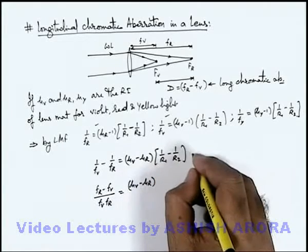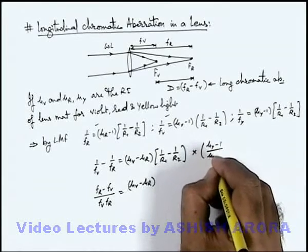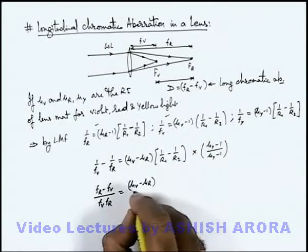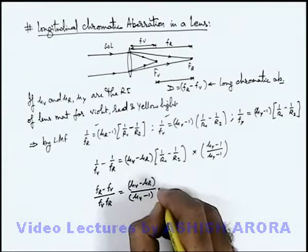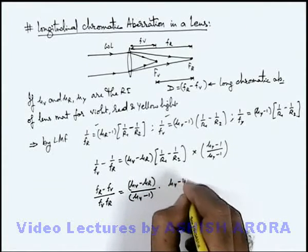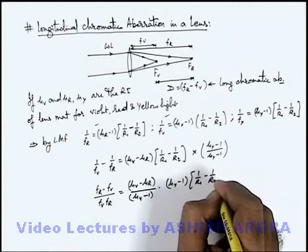And this right hand side we can multiply it by mu_y minus 1 by mu_y minus 1. So this will give us (mu_v minus mu_r)/(mu_y minus 1) multiplied by (mu_y minus 1) multiplied by 1/r_1 minus 1/r_2.